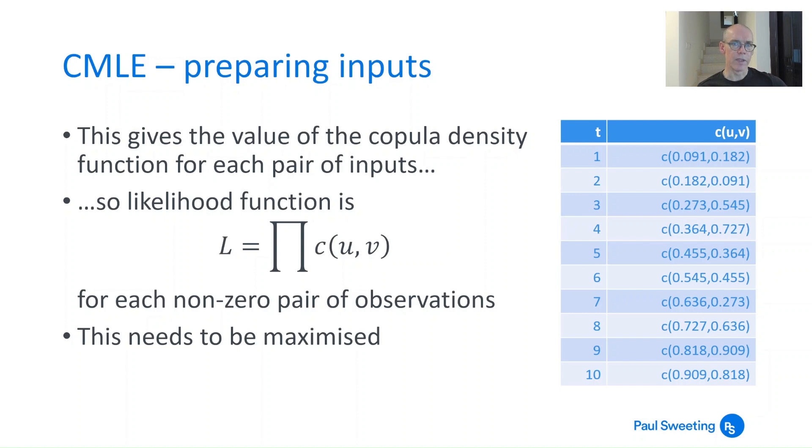This means we can come up with the copula density function, or at least the inputs for it. For the first one it would be c(0.09, 0.182), for the second c(0.182, 0.091), and so on. Your likelihood function is going to be the product of the copula functions with those values of u and v put in, and then you need to maximize that.